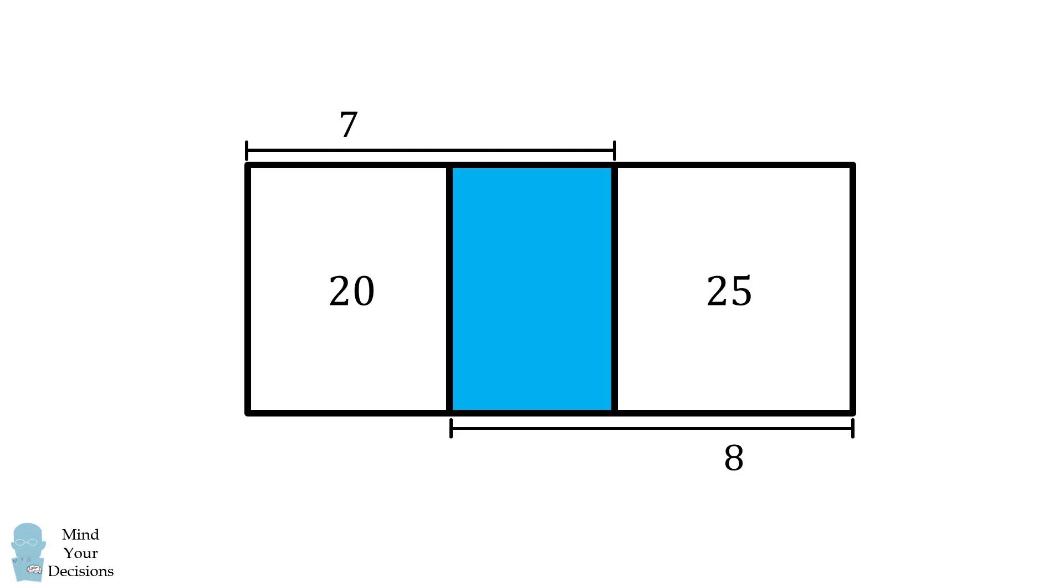Suppose the second rectangle has a width equal to x. We can then calculate the width of the first rectangle in terms of x, and it will be equal to 7 minus x. We can also do this for the third rectangle, so its width is equal to 8 minus x.